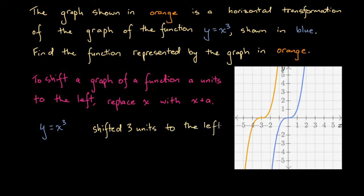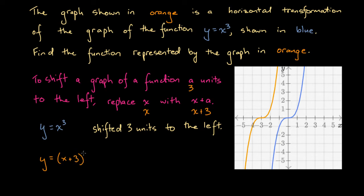To shift a graph of a function a units to the left — here a is going to be 3 — we replace x with x plus 3. So here's our original function y equals x cubed, and to shift this graph 3 units to the left, we take that function and replace every x with x plus 3, giving us x plus 3 cubed.